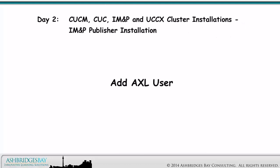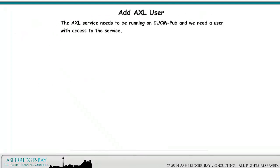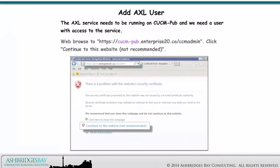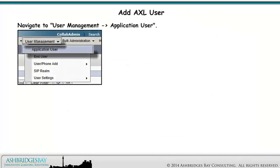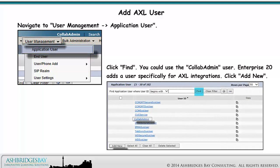We need an AXL user for the IM&P integration with CUCM. The AXL service needs to be running on CUCM Pub and we need a user with access to the service. Web browse to this address and click Continue to this website. Log in using Collab Admin — the application username and password you configured during installation. Navigate to User Management > Application User and click Find. You could use the Collab Admin user, but it's generally recommended for these kinds of users to have only the necessary privileges for their roles.